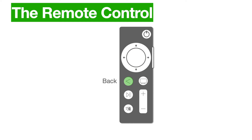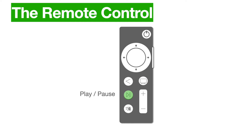In the middle is an enter or select button. Underneath that you have a back button on the left. On the right you have the home button — they call it TV or control center. Then you have play, pause, mute, and volume up and down.